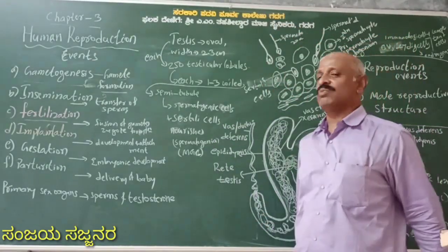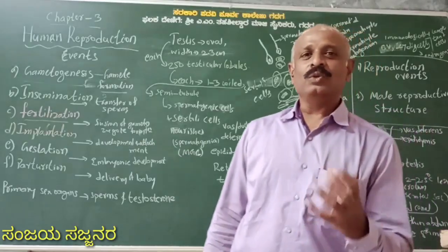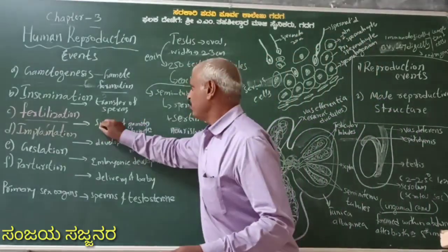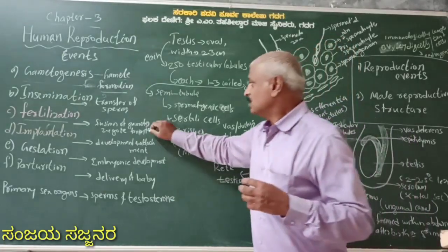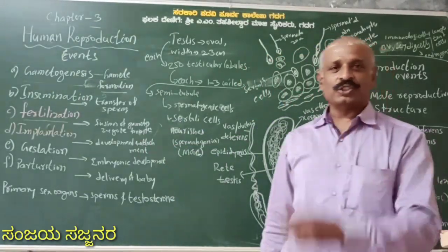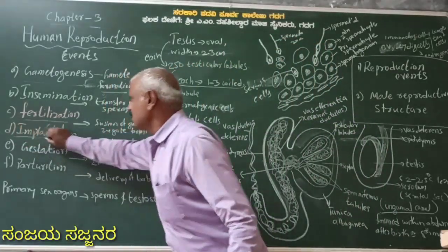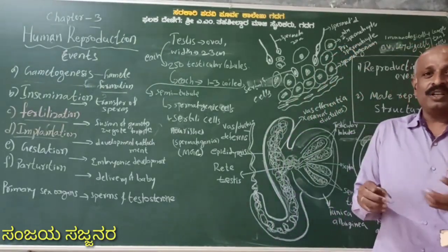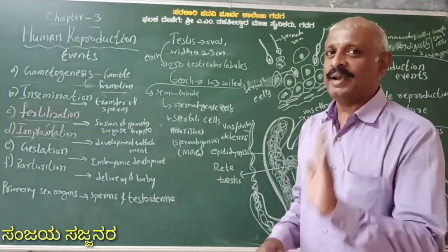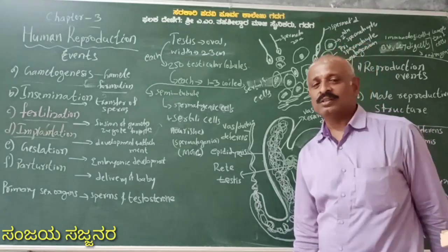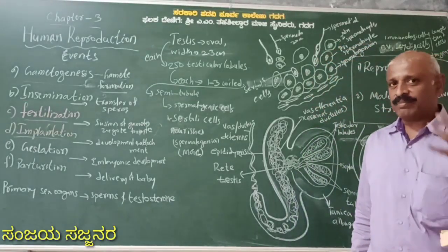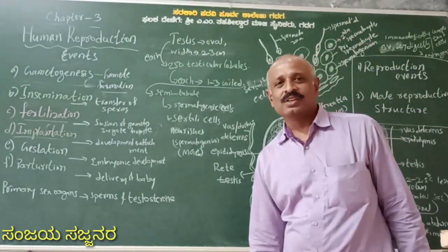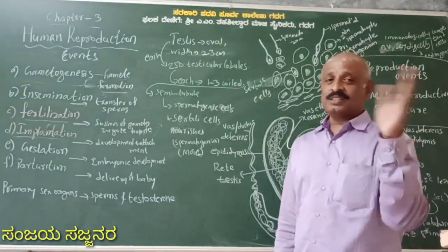Fertilization is the fusion of the male and female gametes, and the formation of the zygote. That is fertilization. And the next event is implantation. Because implantation is very essential. Sometimes some individuals are suffering from implantation failure, for many reasons. We are going to be discussing that in the next class on reproductive health.